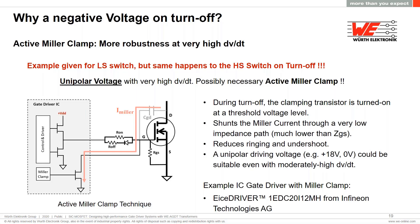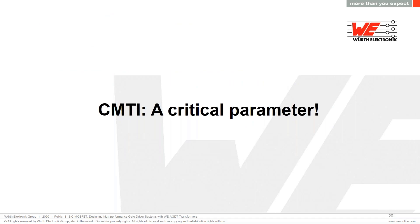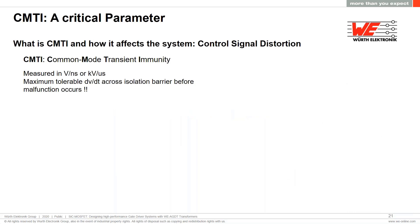Here is an example of a gate driver IC which features an active Miller clamp. Now let's learn more about CMTI and why it is a critical parameter for silicon carbide gate driver systems. CMTI stands for common mode transient immunity. It is measured in V/ns or kV/μs and indicates the maximum rate of change of voltage — dv/dt — which can be applied across the isolation barrier of the gate driver system before malfunction and loss of control occurs.